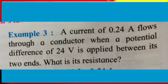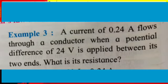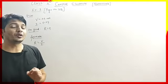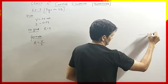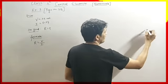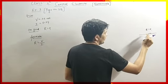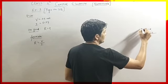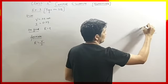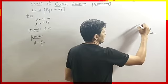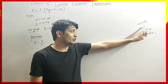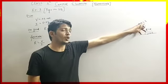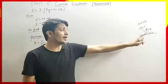First we have to understand the given part. There is a conductor which is given, and the resistance of the conductor is what we have to calculate. The potential difference between these two points is 24 volt, and the current passing through the circuit is 0.24 ampere. So what is given: 24 volt of potential difference and 0.24 ampere of current. We have to find the resistance.